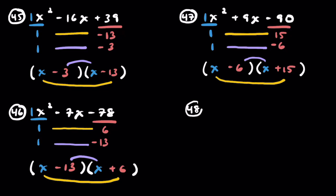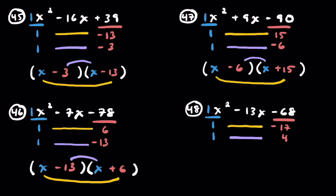Problem 48: x squared minus 13x minus 68. One and 1. For 68: 68 divided by 2 is 34, divided by 2 is 17. So we have 17 and 4. Negative 17 and positive 4 gives negative 13. Feel free to make a factor tree if needed — the point is learning how to create the binomials, so use a calculator if arithmetic is a barrier. Answer: (x − 17)(x + 4).